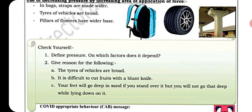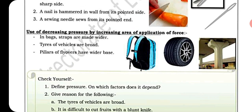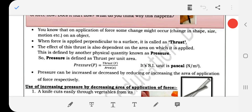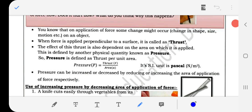Now check yourself: Define pressure — on which factors does it depend? Pressure is defined as thrust per unit area, and this is the formula. It depends on force — kitne force se thrust lagaya gaya hai — and the area on which it is applied. So it depends on two things: force and area.